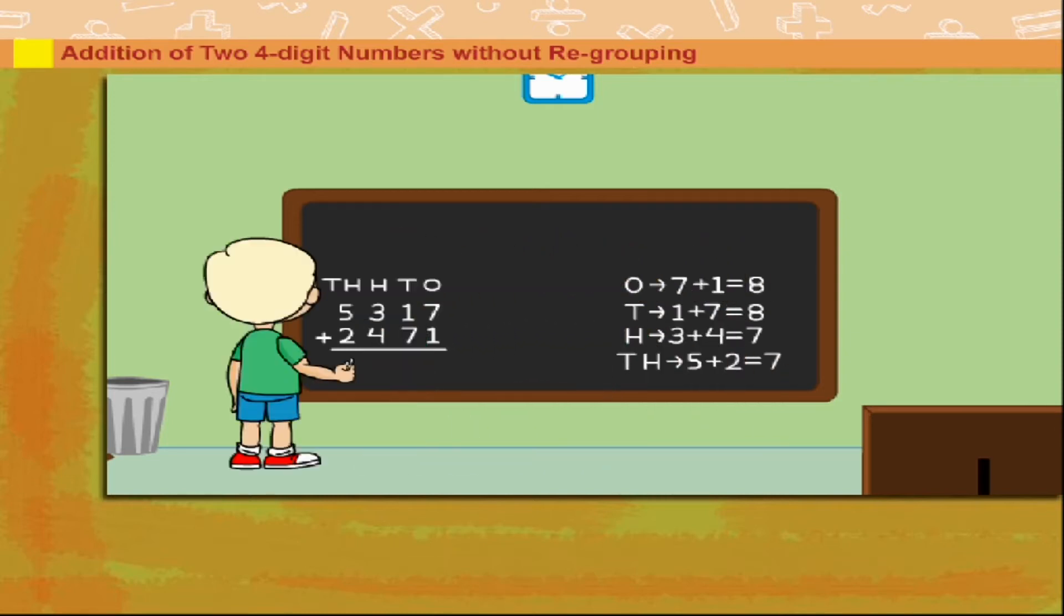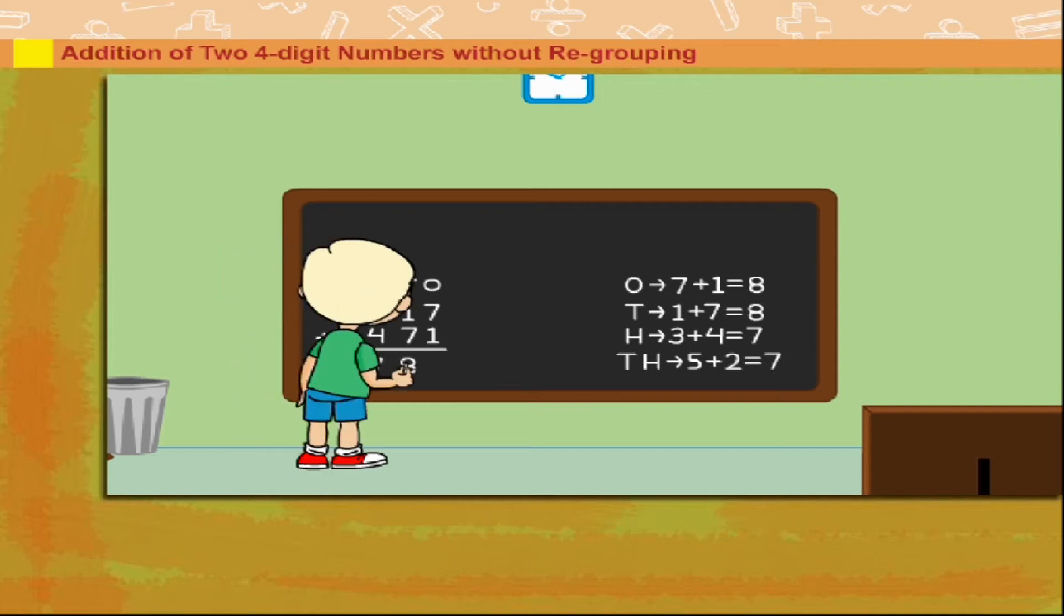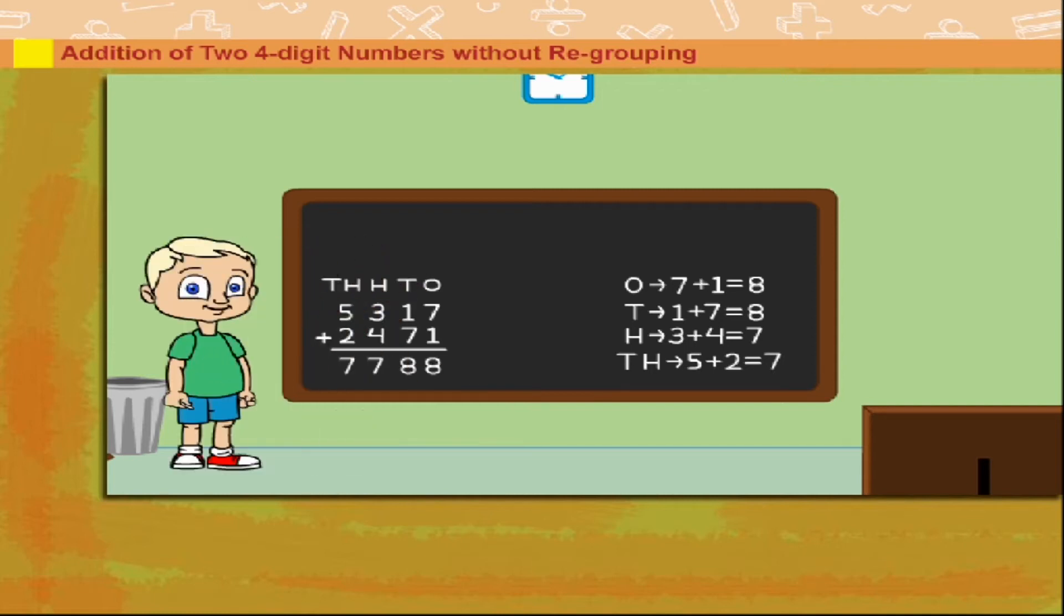Mikki writes the added figures in their place values as 7788. That was really smart Mikki.